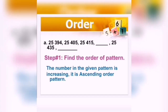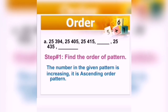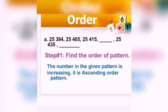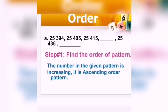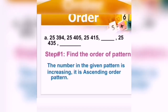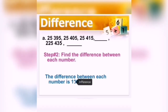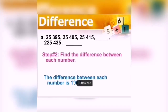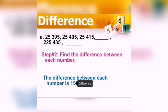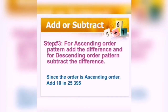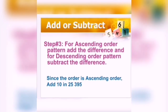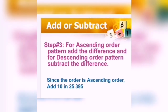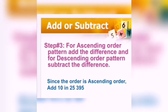First, we find the order of the pattern. The numbers in the given pattern are increasing, so it is an ascending order pattern. Second, we find the difference between each number — here the difference is 10. For ascending order, add the difference; for descending order, subtract the difference.